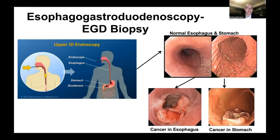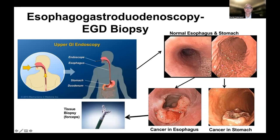In the how-do-we-diagnose and how-do-we-stage videos, we went through an endoscopy, and this is typically how the cancer is diagnosed — with the endoscopist, either for an esophageal cancer or a stomach cancer, visualizing a cancer mass in the lumen inside the tube of the esophagus and stomach. From there, a biopsy is taken with a forceps on the end of the probe, and that biopsy is then processed and made into a formalin-fixed paraffin-embedded block.